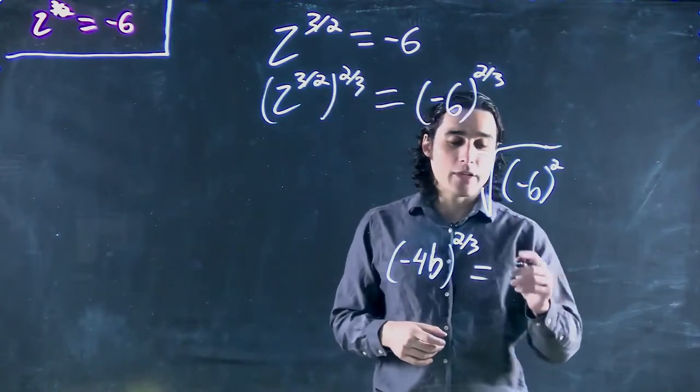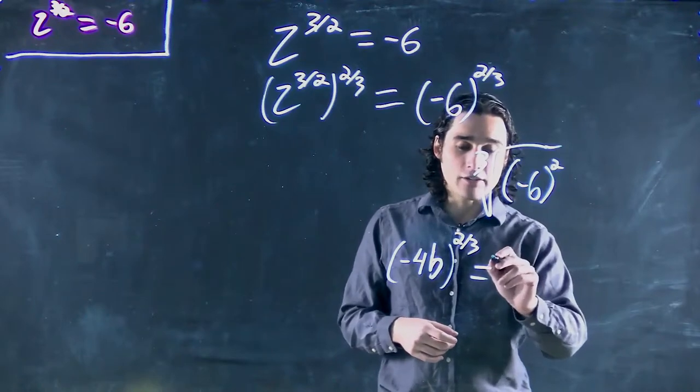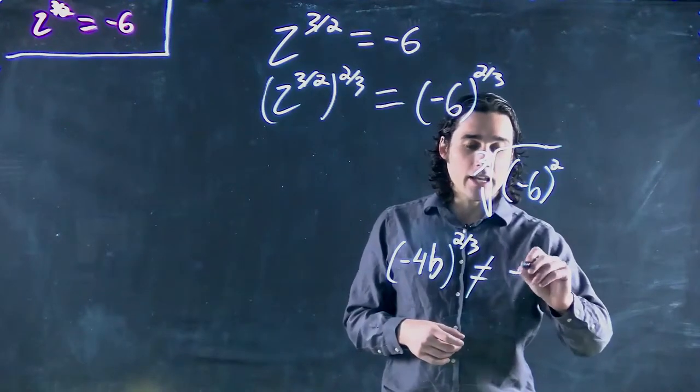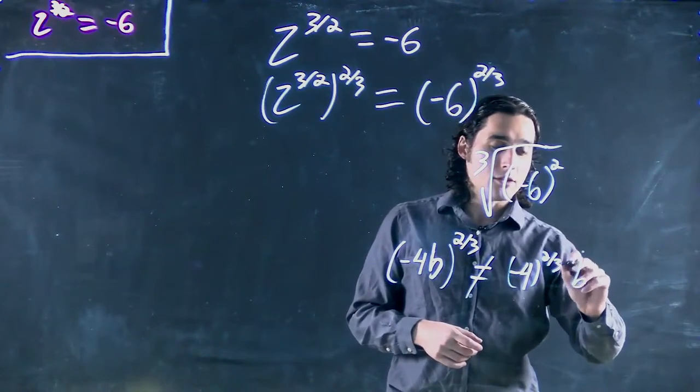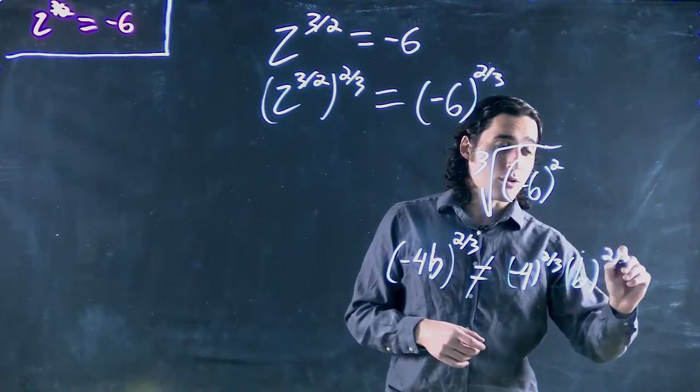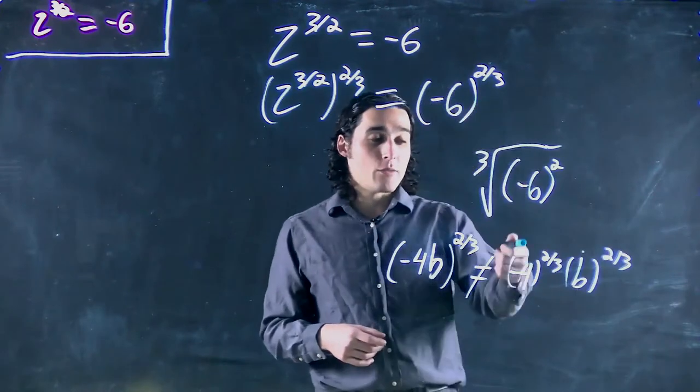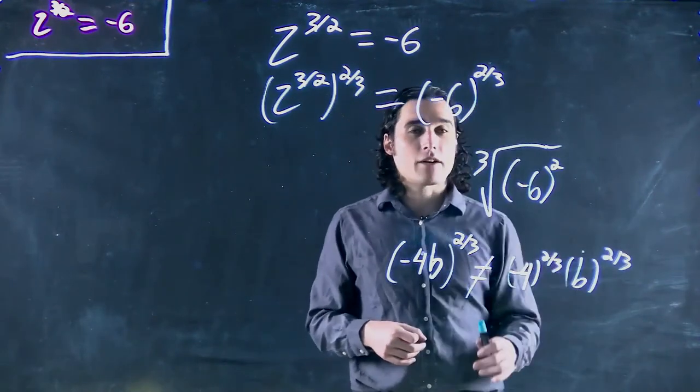So let's say we have this, we cannot write this as negative 4 to the 2 thirds and b to the 2 thirds. And that really fits with what we've just been talking about. We just said we can't take negative 4 to the power of 2 thirds.